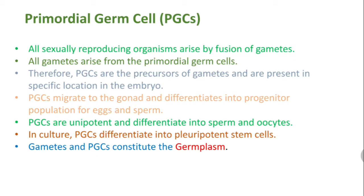Before starting, let's understand a few important terms. All sexually reproducing organisms arise by the fusion of gametes — sperm as well as ova — and all gametes arise from primordial germ cells. Therefore, primordial germ cells (PGCs) are the precursors of gametes, and they are present in specific locations in the embryo.